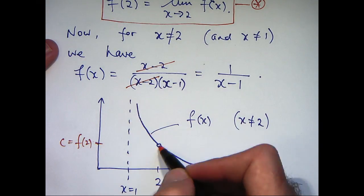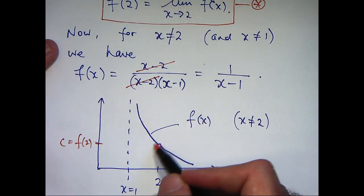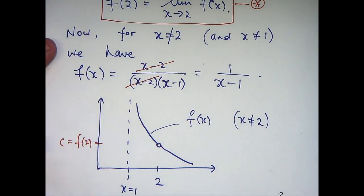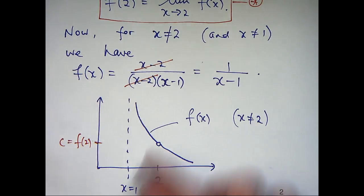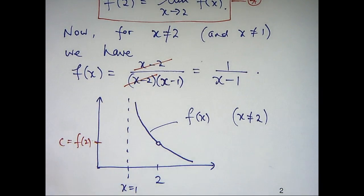Okay, it's already continuous here and here. Well, here and here, I guess. But at x equals 2, we need to define it so we can plug this hole and make the whole part of this curve continuous.